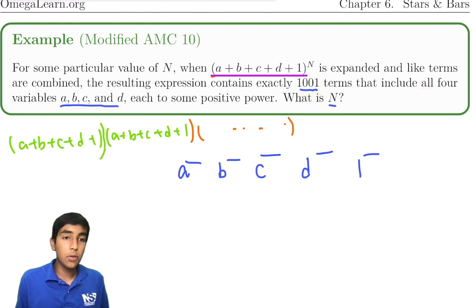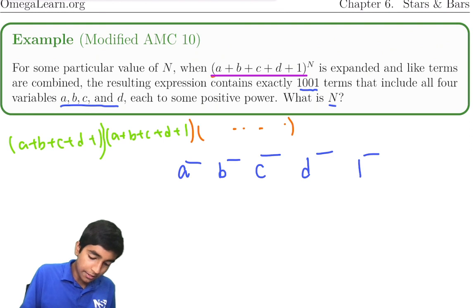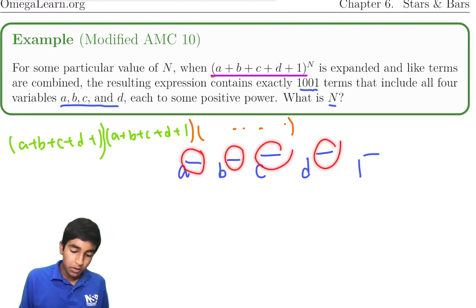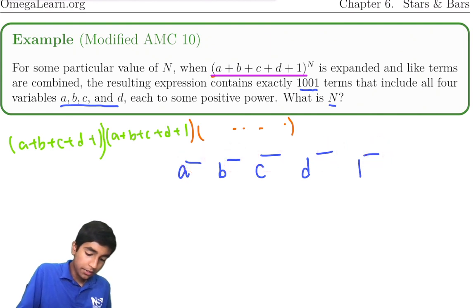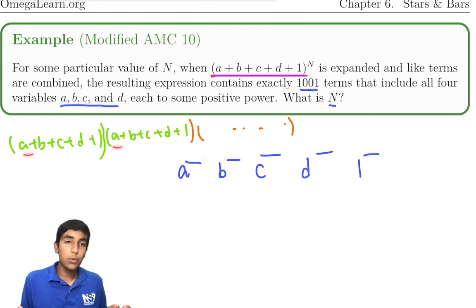The problem is saying that 1,001 terms include all four variables a, b, c, and d to some positive power. So how can we think about this in terms of distributing? Essentially, we have n terms distributed amongst these exponents. The reason is that these exponents will sum to n because we only have n total terms.